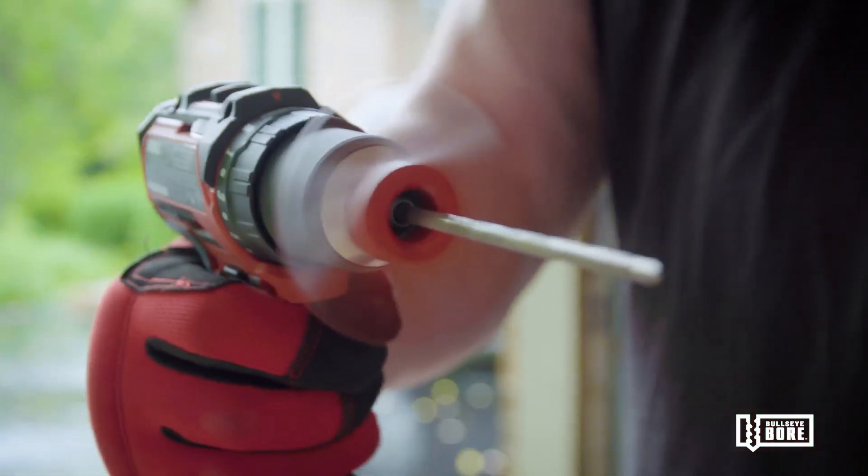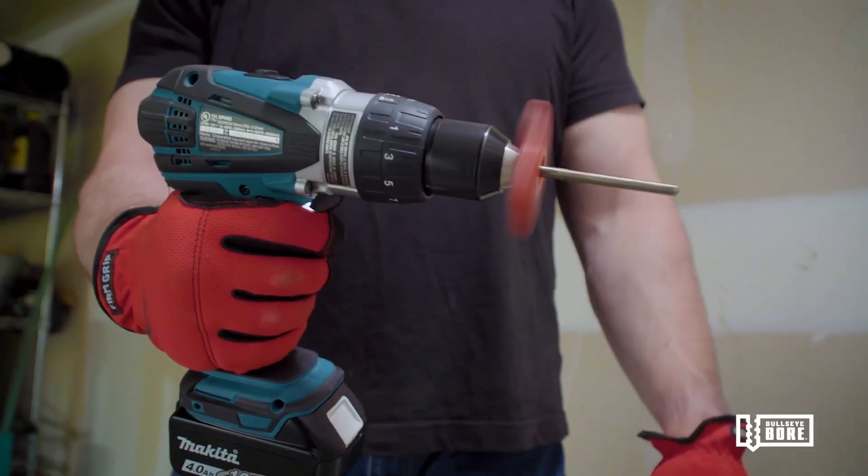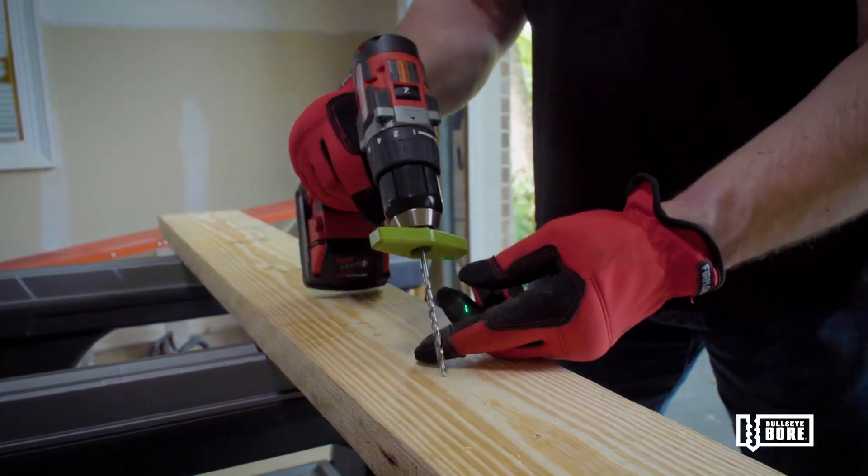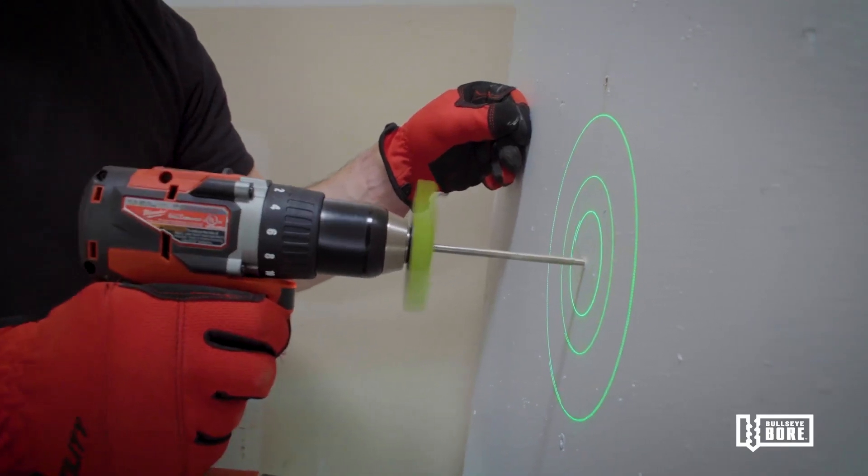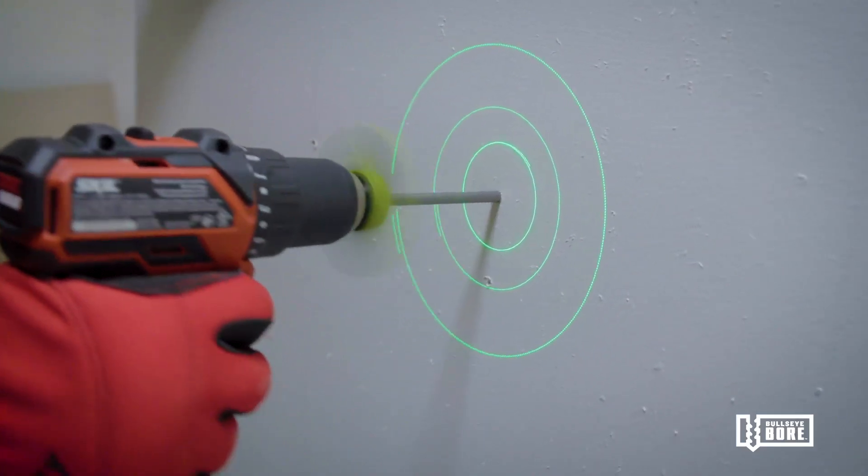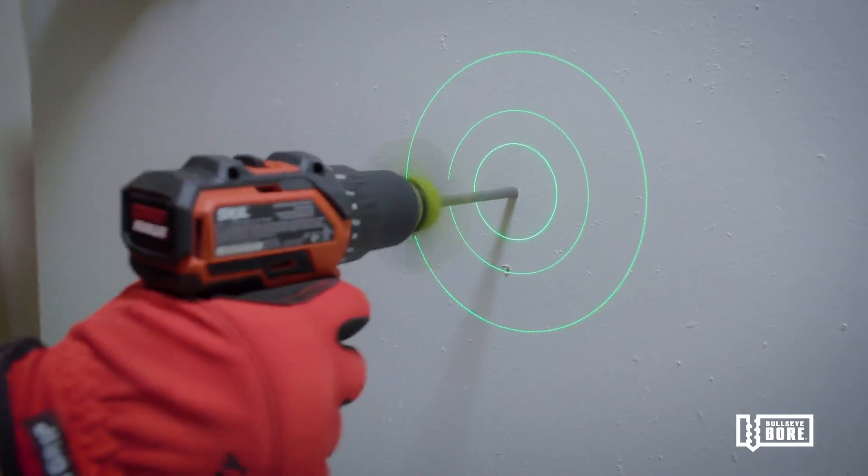And that's the reason why we invented Bullseye Bore Core. Bullseye Bore Core is a simple power drill accessory that mounts to the front of your drill chuck. It rotates with your drill and produces several easy-to-see circular patterns on the work surface.